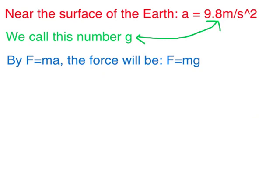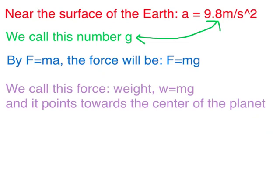we can, by Newton's second law, f equals ma, write the force on the object as f equals mg. We call this force mg the weight, and we often indicate it with the letter little w. So near the surface of the Earth, any object feels a force down, called the weight, and that force has magnitude mg, and the direction of the force is towards the center of the planet.